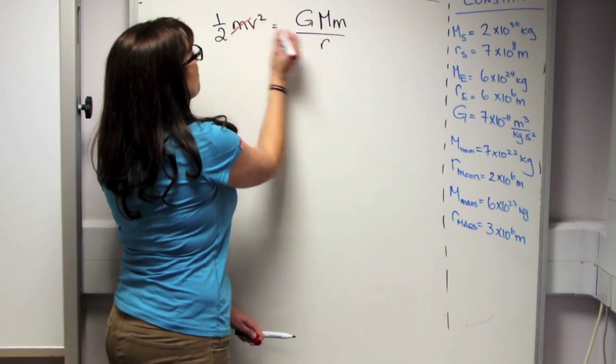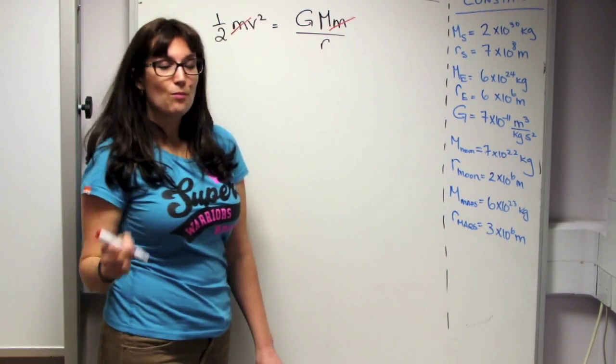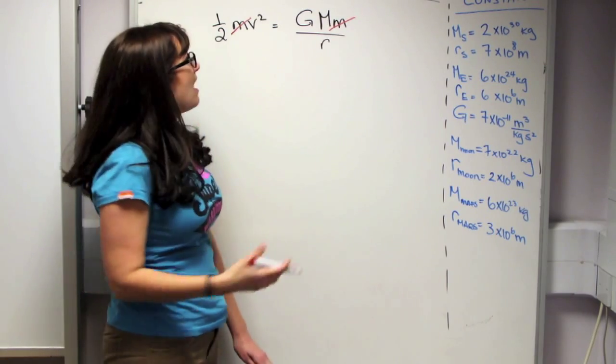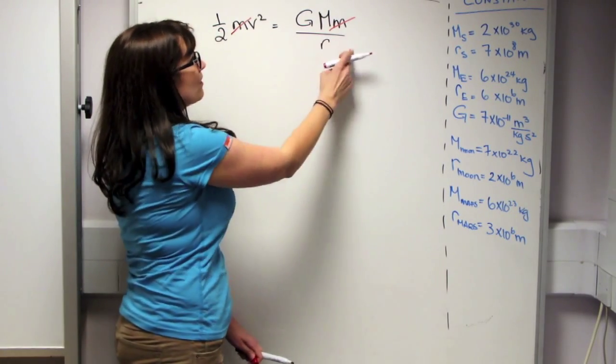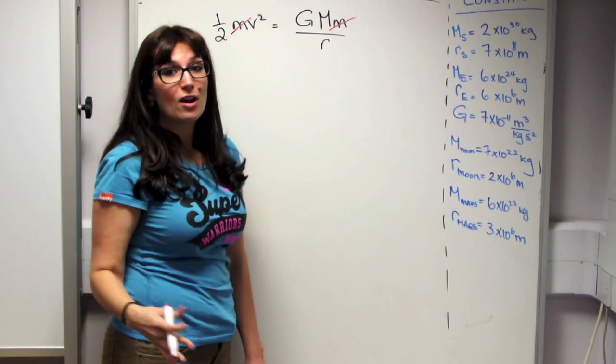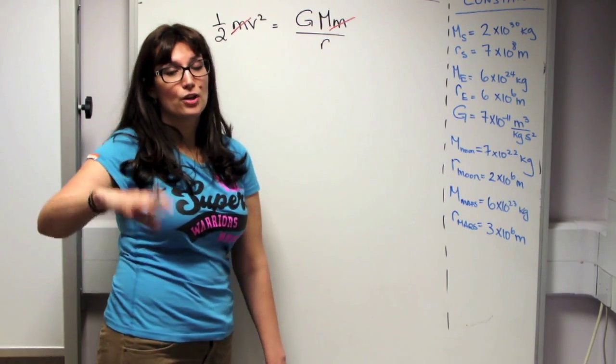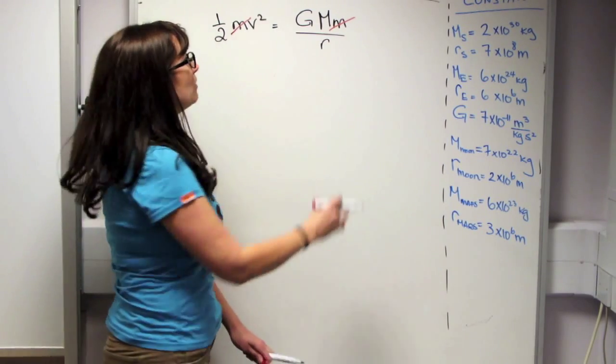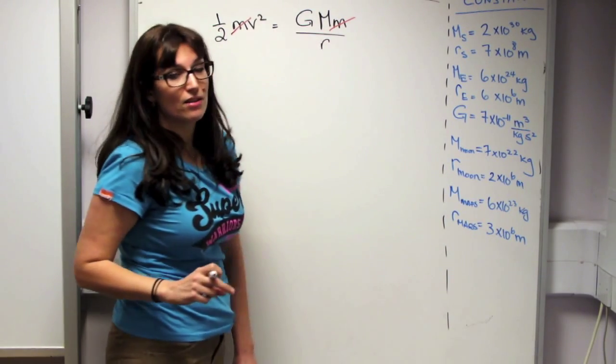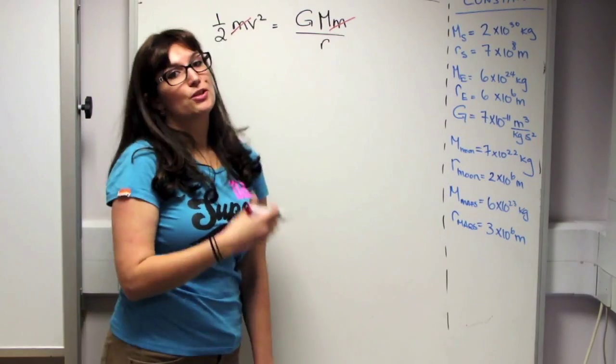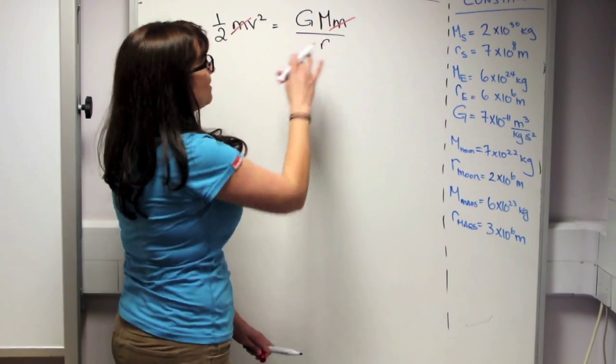You can see that both sides depend in the same way on little m. And that means that it doesn't matter if we're throwing a ball or a rocket into space, they both have the same escape velocity. So it doesn't depend on what you're trying to throw into space. It only depends on the mass of the Earth or any object that you're trying to escape from and its radius.